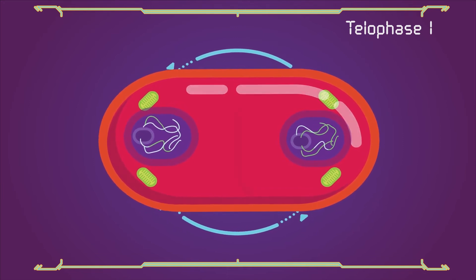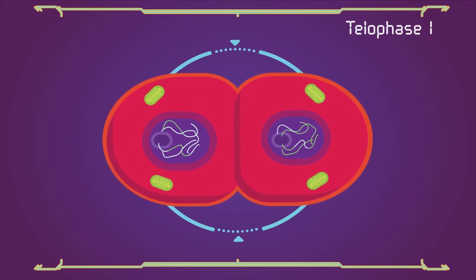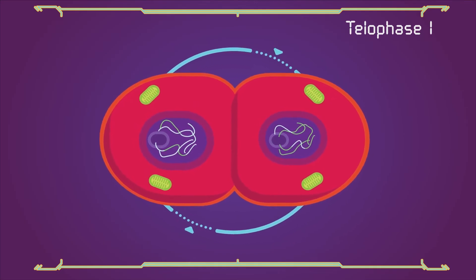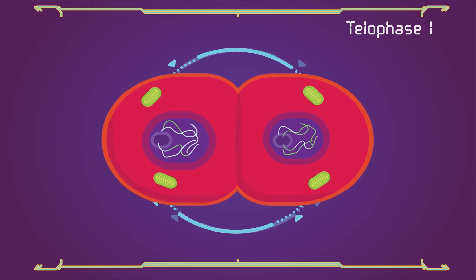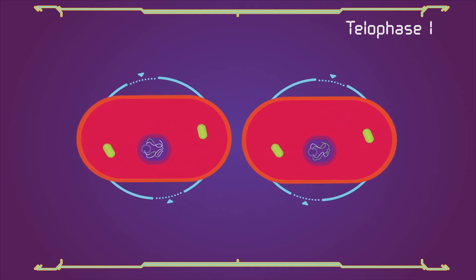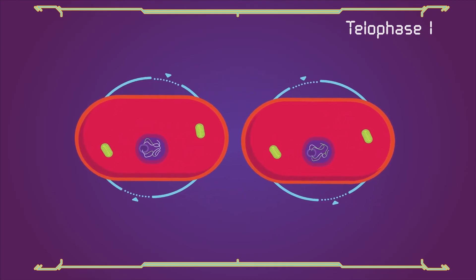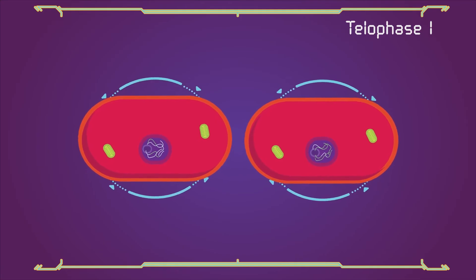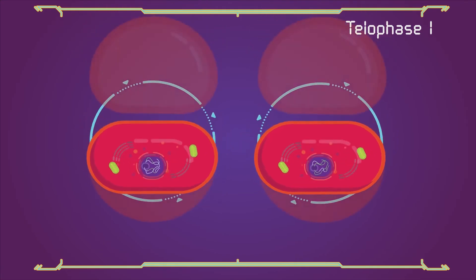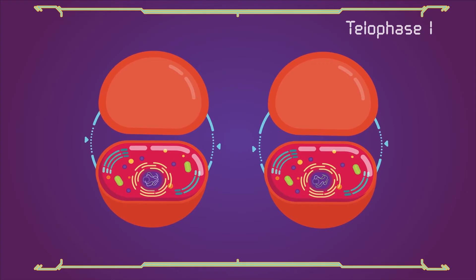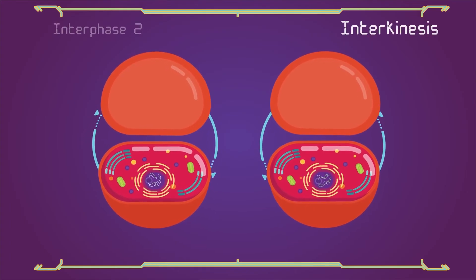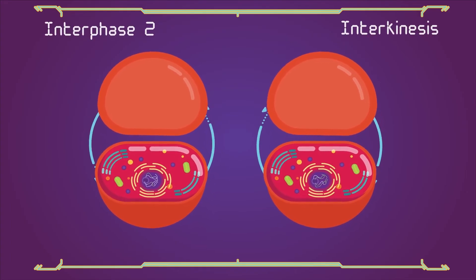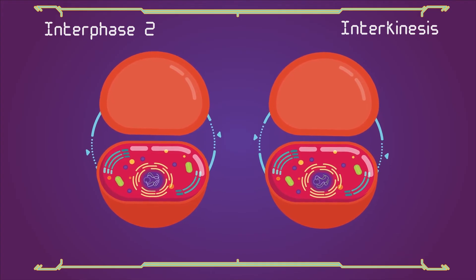Cytokinesis, the pinching of the cell membrane in animal cells or the formation of the cell wall in plant cells occurs, completing the creation of two daughter cells. Cytokinesis remains attached during telophase 1. Cells may enter a period of rest known as interkinesis or interphase 2. No DNA replication occurs during this stage.